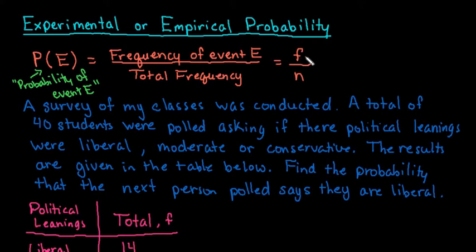So the shorthand notation is just f, which represents the frequency divided by n. It's the same thing as the relative frequency that was found in other videos that I have done.